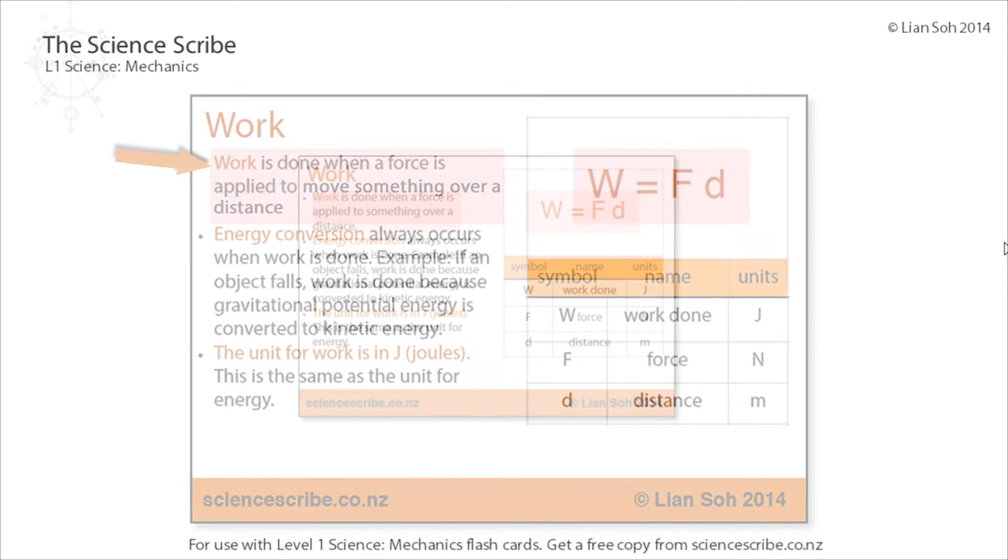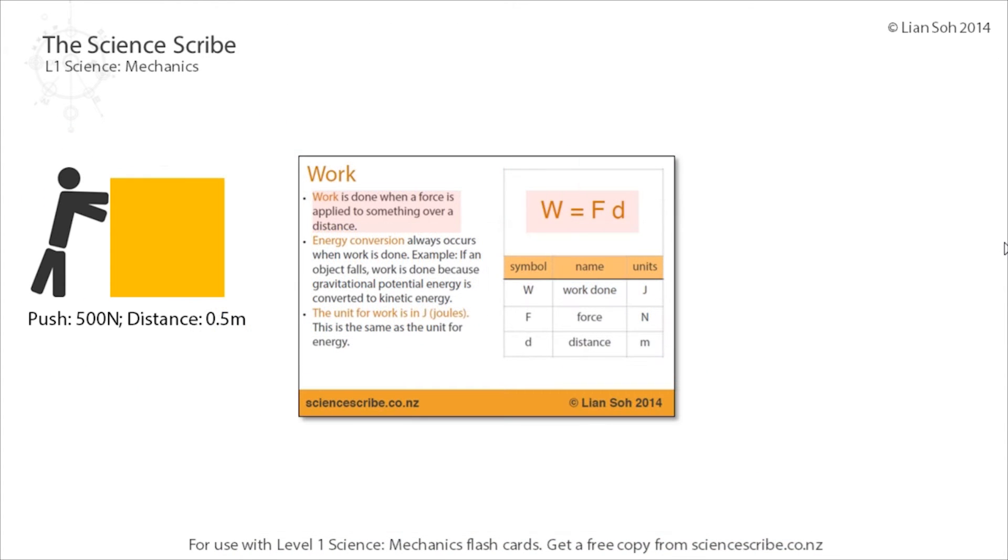Work is done when we apply a force to move something over a certain distance. For example, if we had a person pushing on a box with a force of 500 newtons over a distance of 0.5 metres, I've moved something with a force, therefore I could say work is being done.